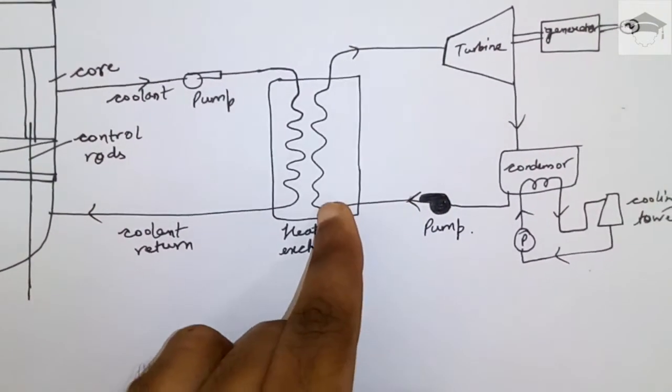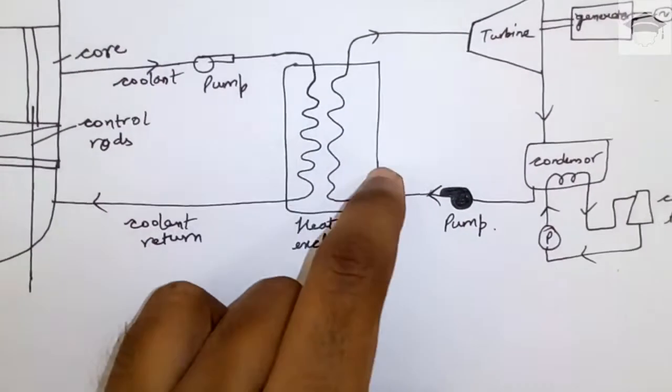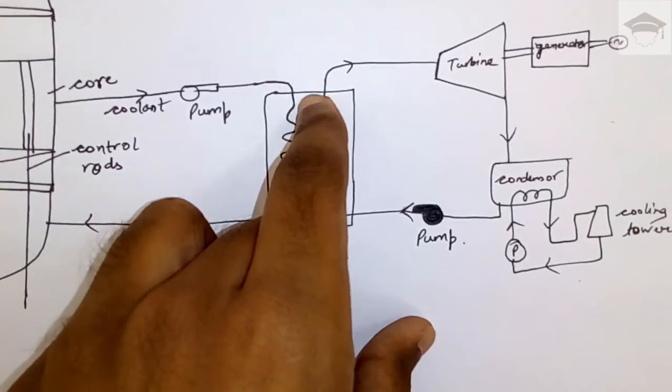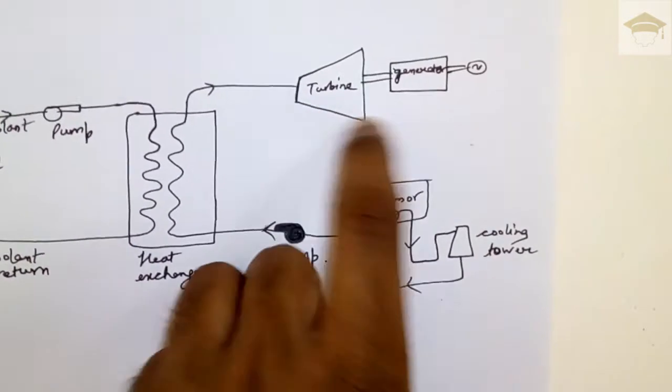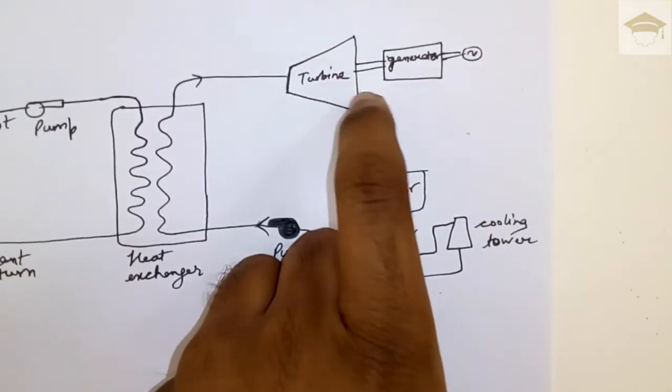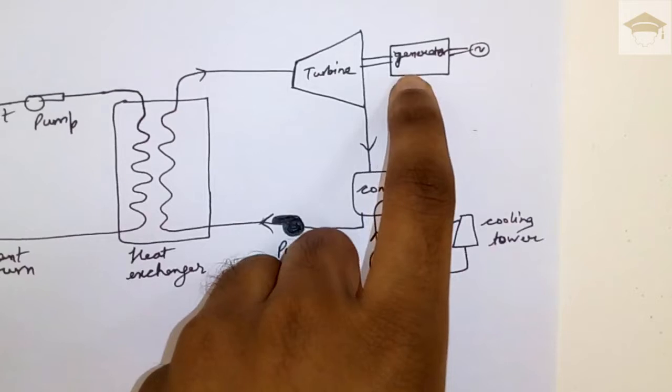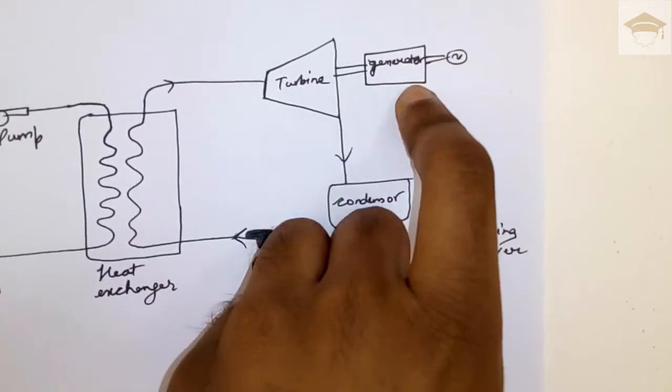Steam is generated. Steam is moved over the turbine. Turbine rotates and the generator is coupled to the turbine. So this rotor in the generator rotates. By Faraday's law, EMF is generated and then electricity is produced.